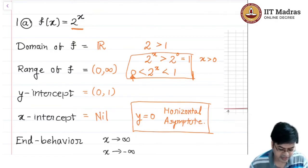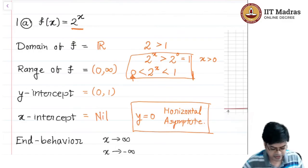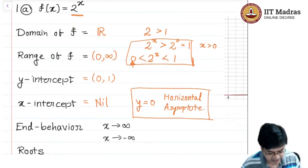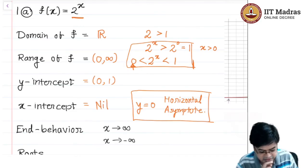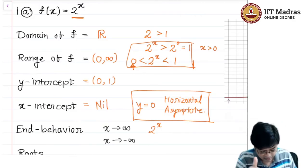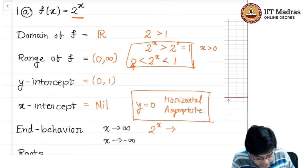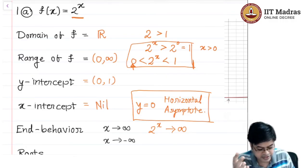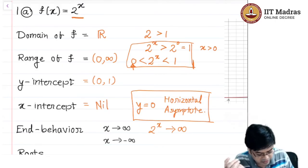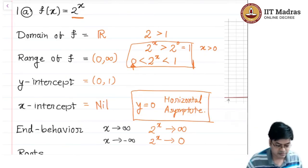Let us now look at the end behavior. As x tends to infinity, 2^x also increases — in fact at a faster rate than x itself — so it tends to infinity. And as x tends to minus infinity, we have already established that y = 0 is the horizontal asymptote, so 2^x will go to 0.